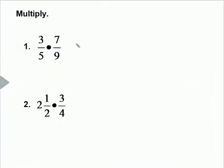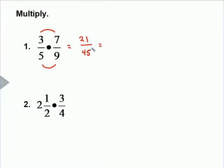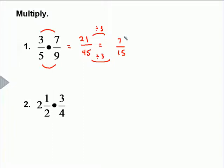Here are two more quick examples to remind us of how it works. We'll multiply the top times the top, and the bottom times the bottom. Three times seven is twenty-one. Five times nine is forty-five. Now, three will go into both twenty-one and forty-five so that we can simplify it. Twenty-one divided by three is seven, and forty-five divided by three is fifteen. Seven fifteenths is our answer.